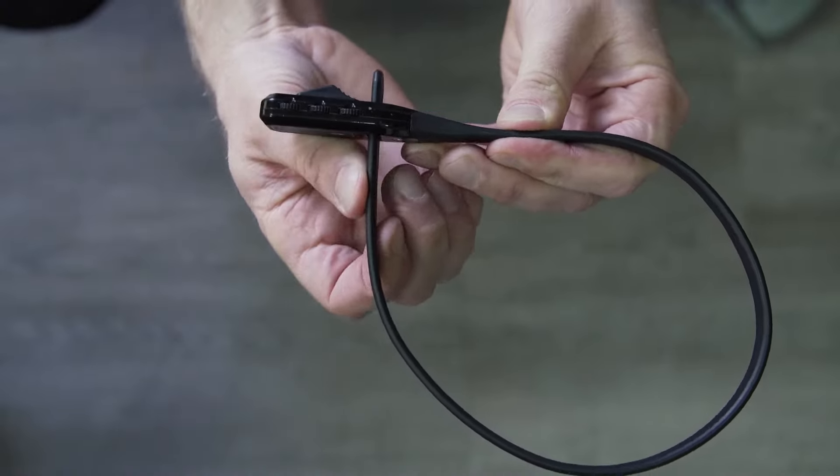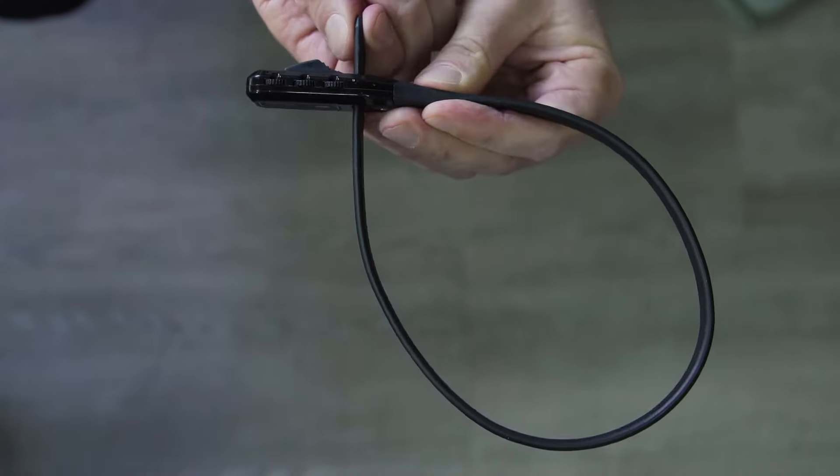To lock your Z-Lock, push the end through the hole and tighten to desired diameter.